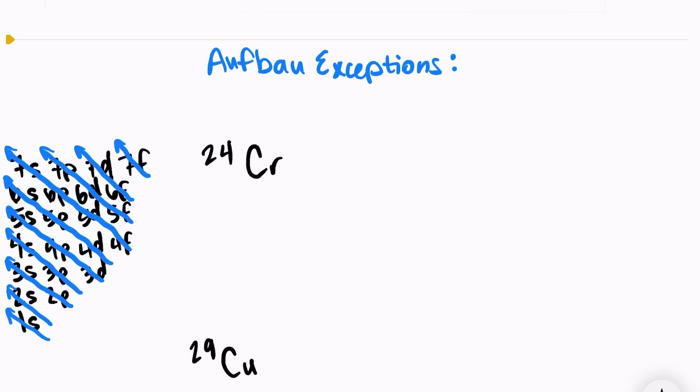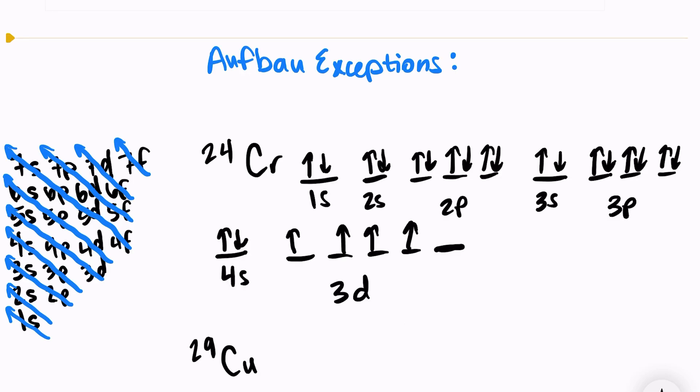The first is chromium. So let's go ahead and write out the orbital diagram. Here's the orbital diagram for chromium. We have 24 electrons. The reason this is an exception is because it is highly unstable to have an empty d orbital. It is very unstable to have only one empty orbital in the d sublevel.